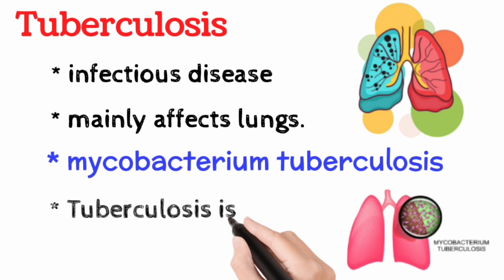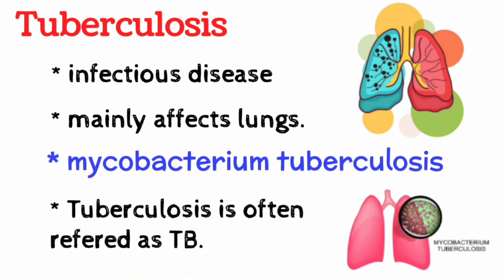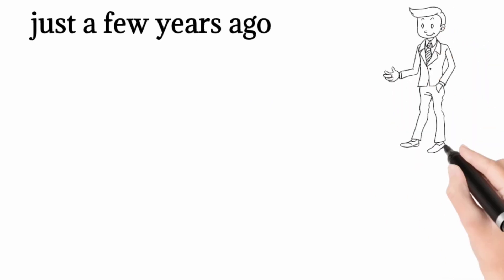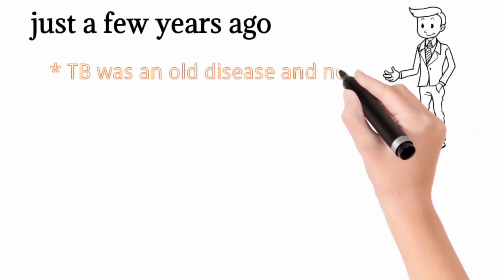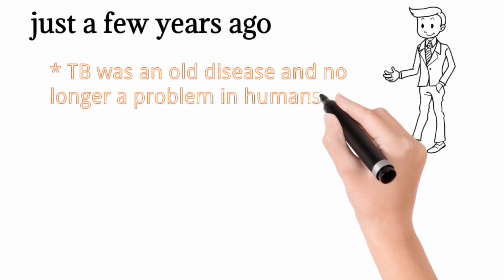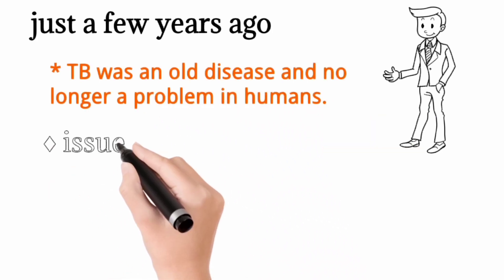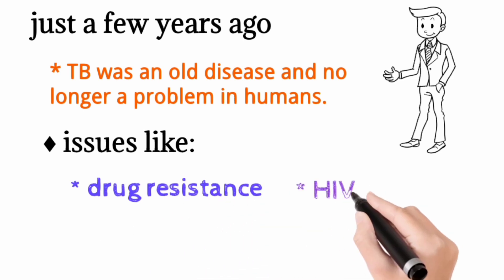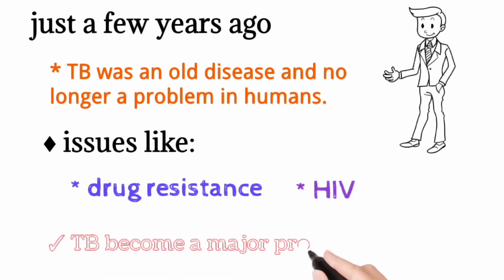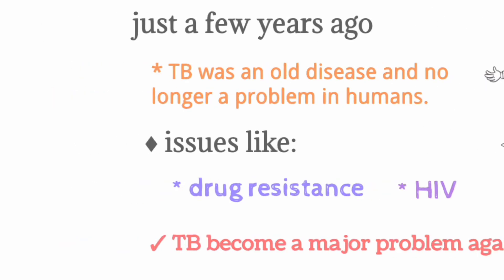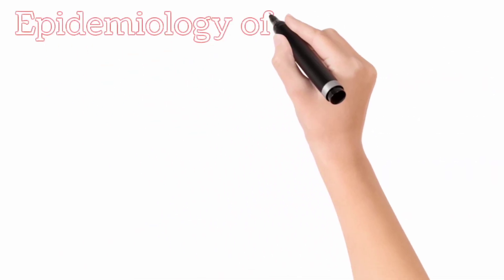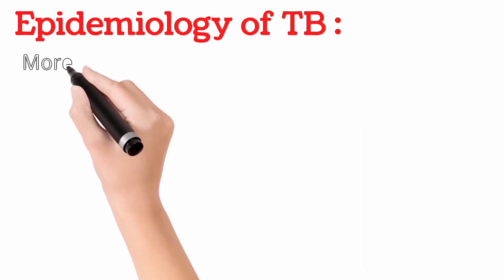Just a few years ago it was believed that TB was an old disease and that it was no longer a problem in humans. But now, because of such issues as drug resistance and HIV, it has become a major problem again. Talking about the epidemiology, globally more than one in three individuals is infected with TB.